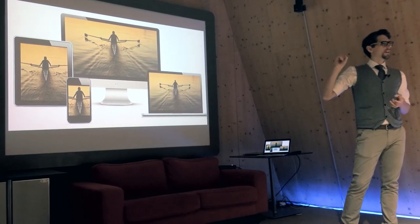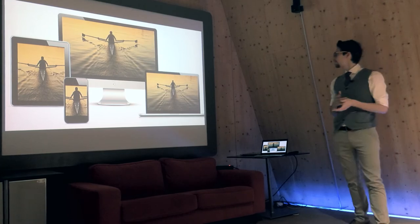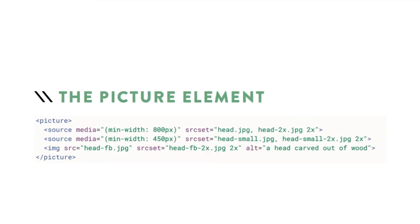The basic HTML5 code for that is the picture element — it's the easiest solution. Here you can see the old image resource is still there as a fallback, so if IE8 accesses the website it will just use the old image. For basically every modern browser you have the picture element where you can define different images for different screen sizes.